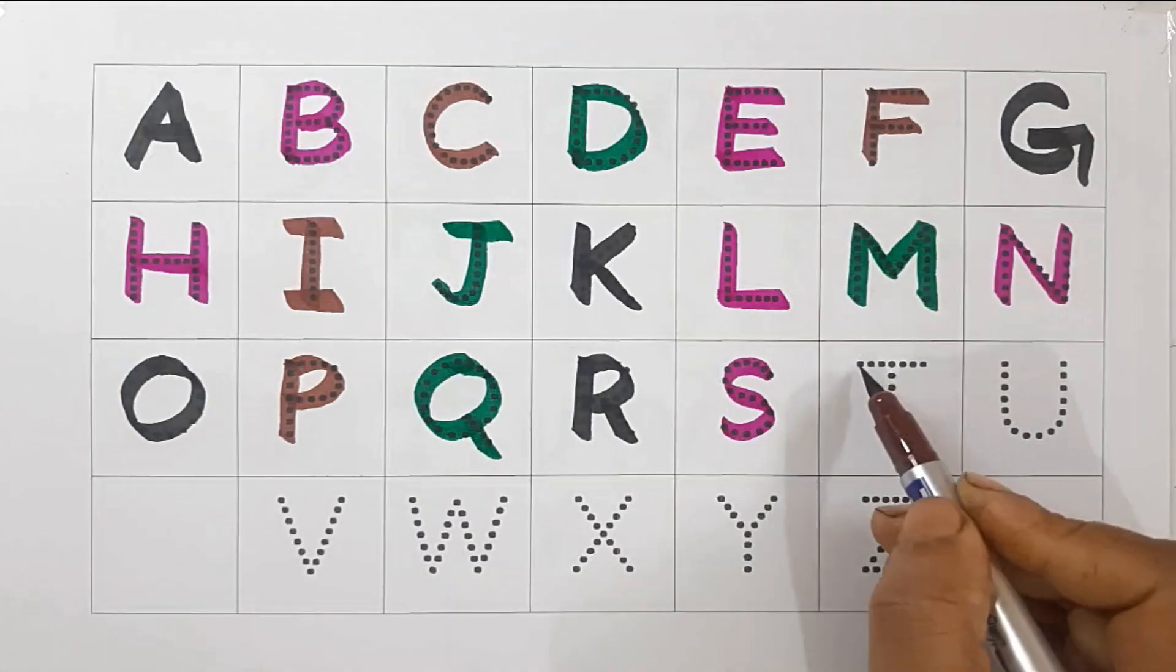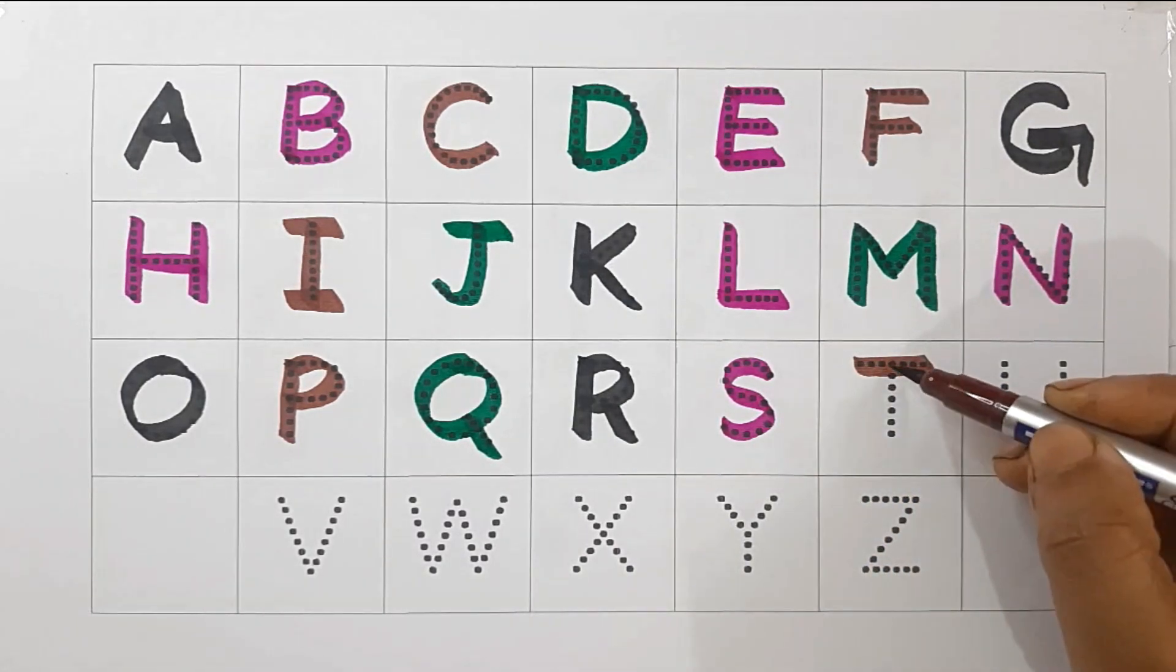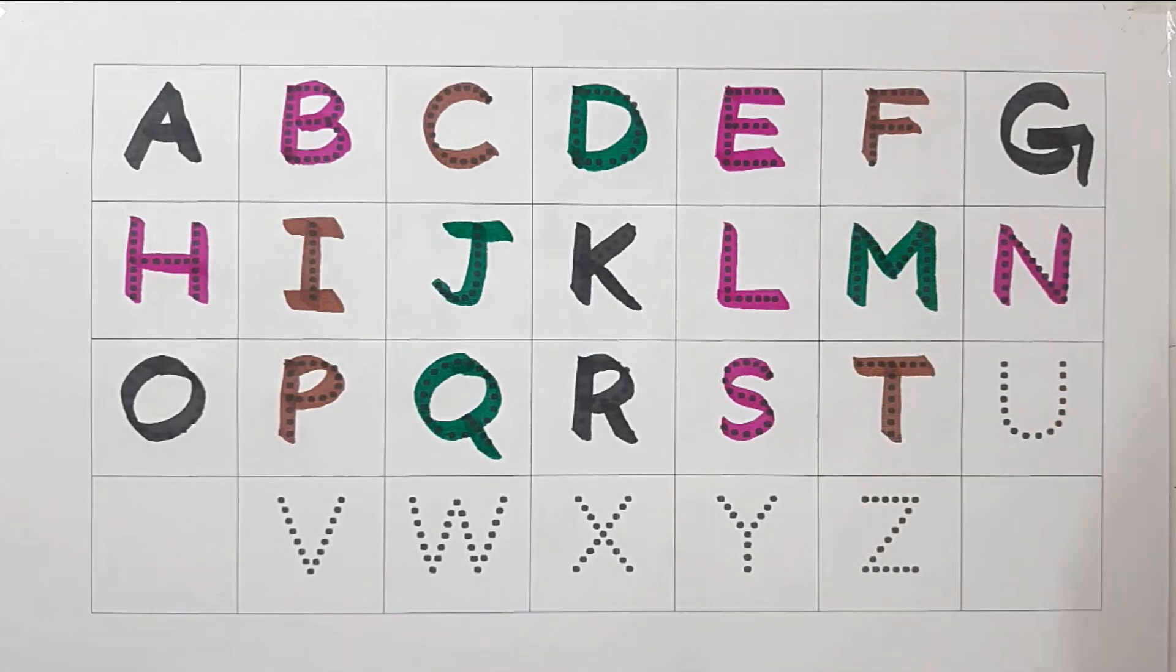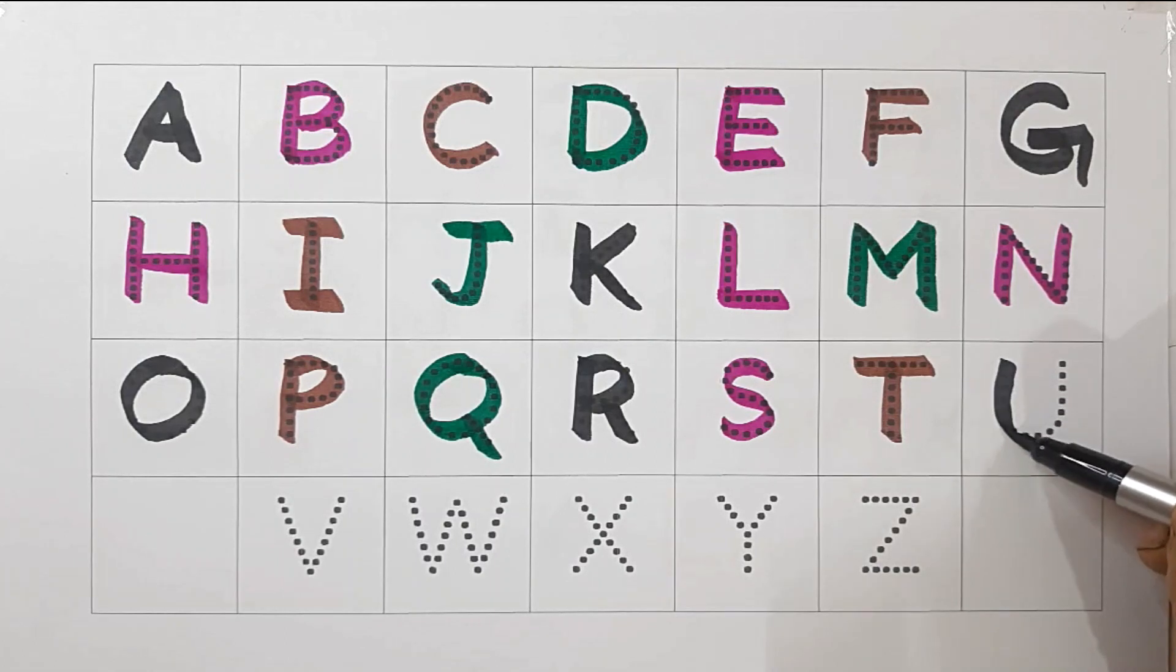Brown color, T, T for time. Black color, U, U for uniform.